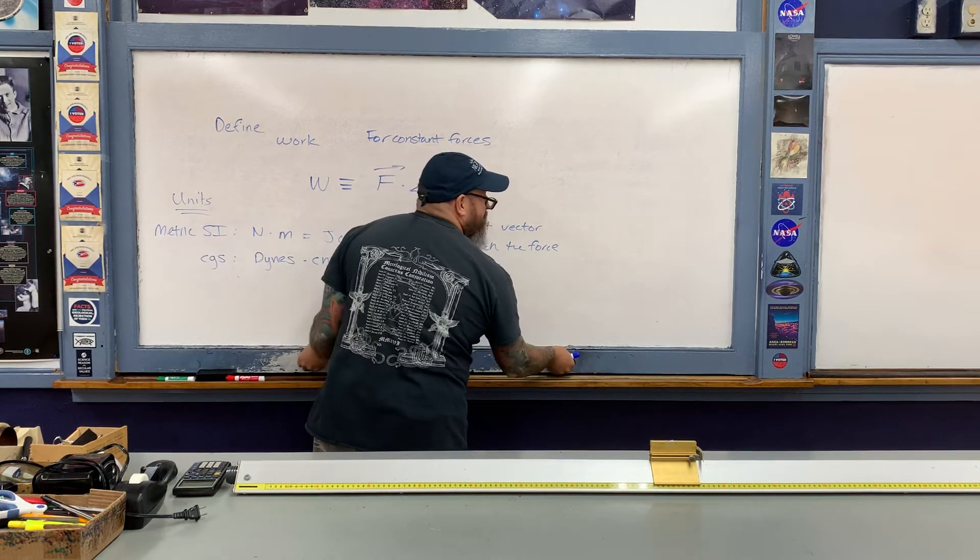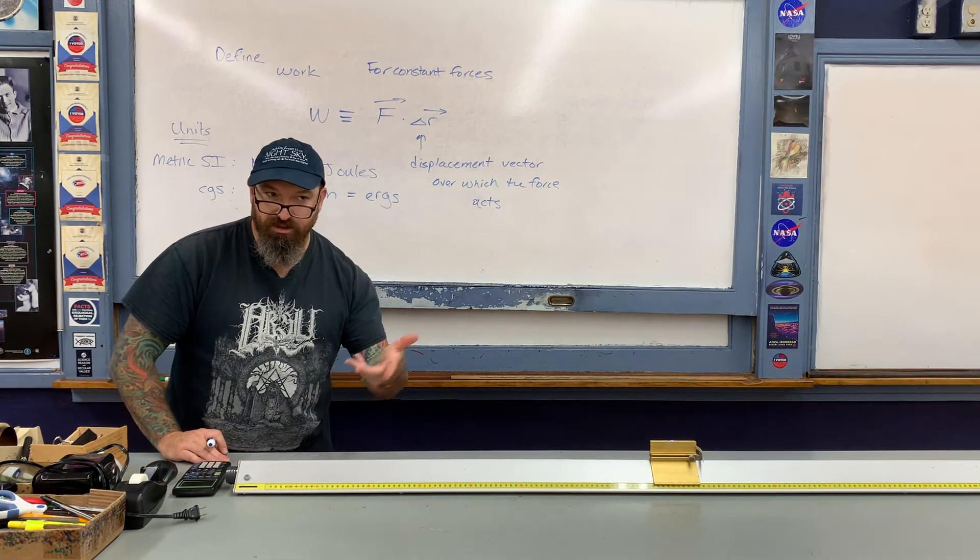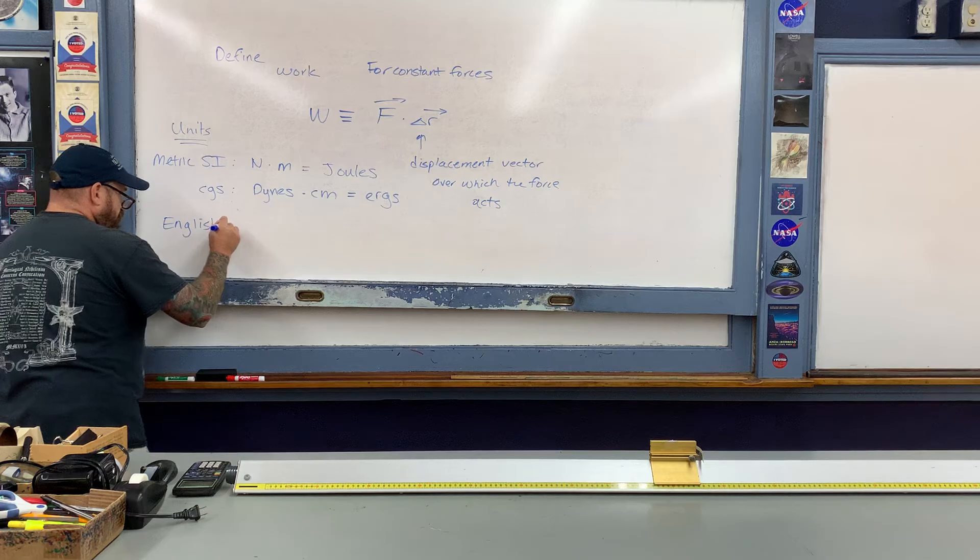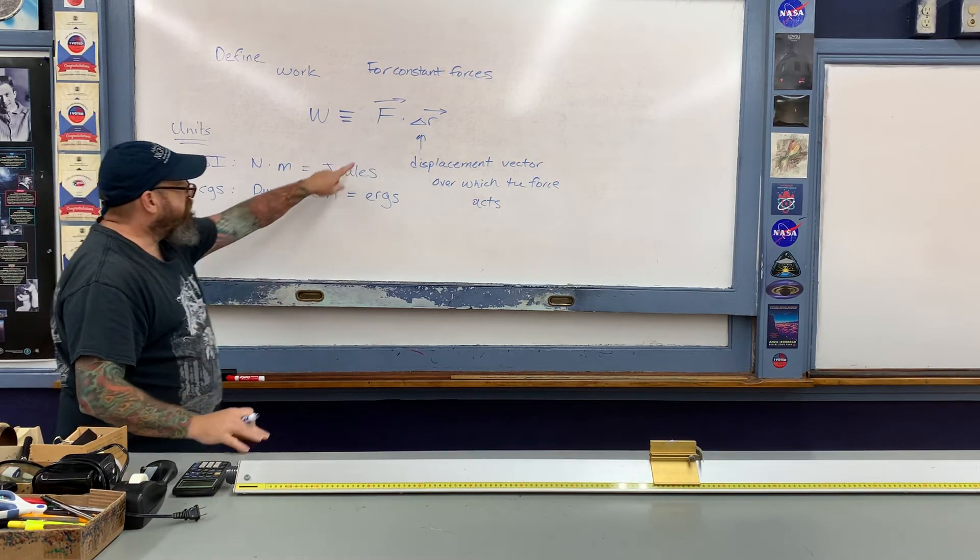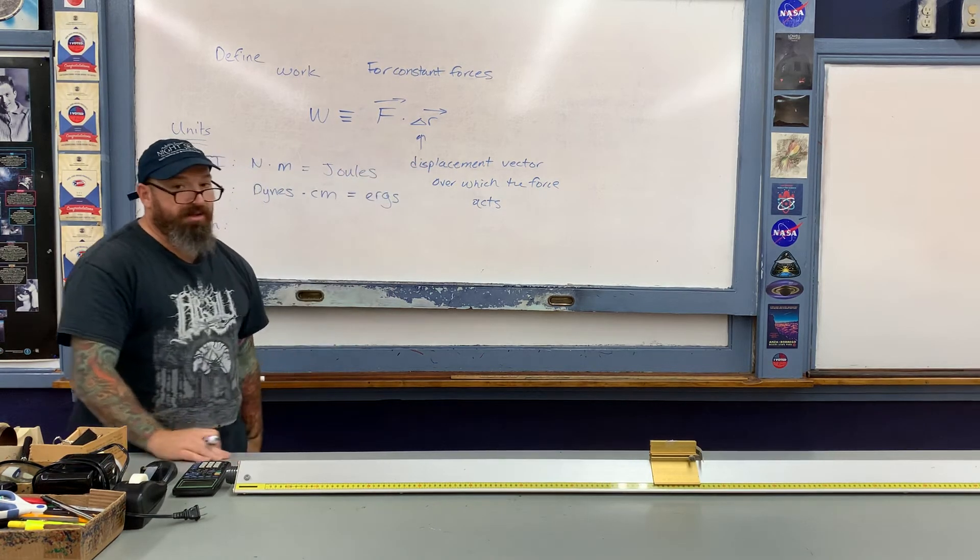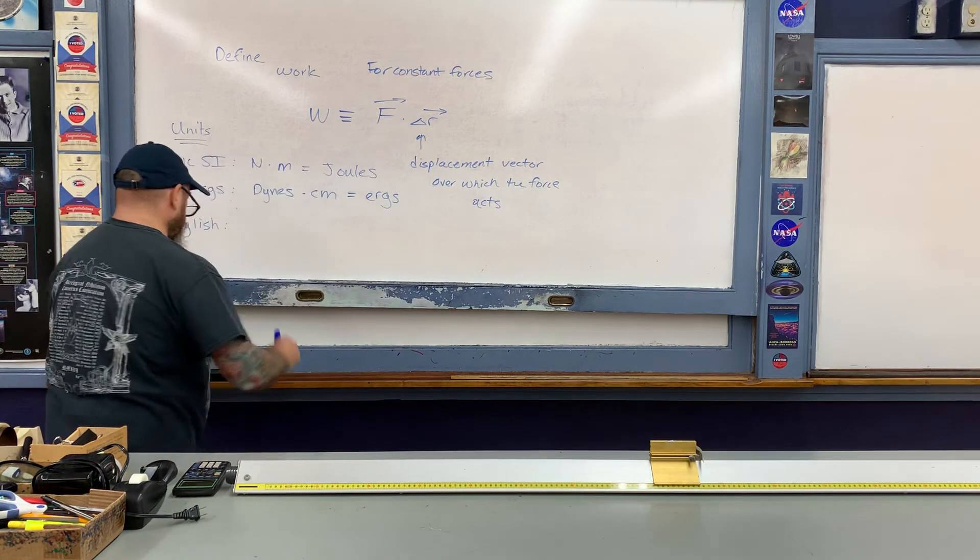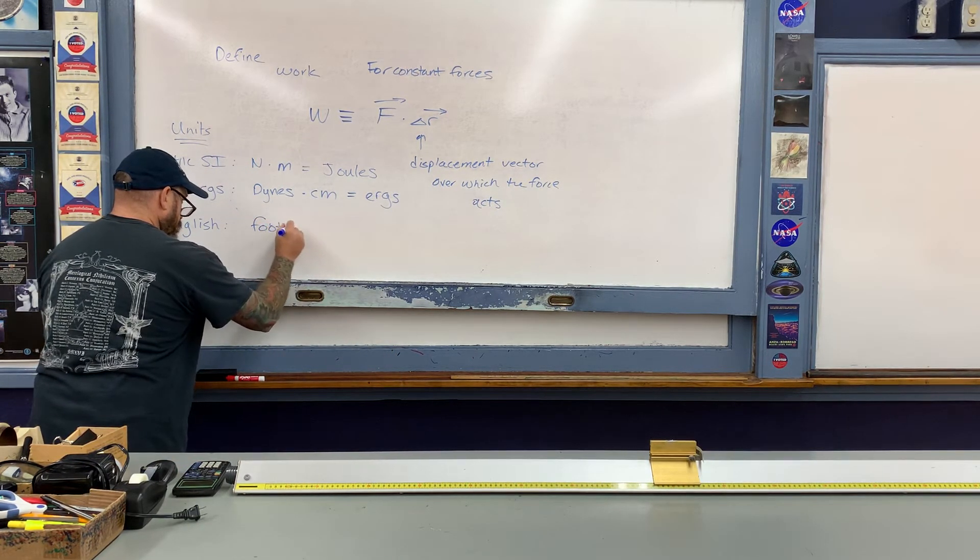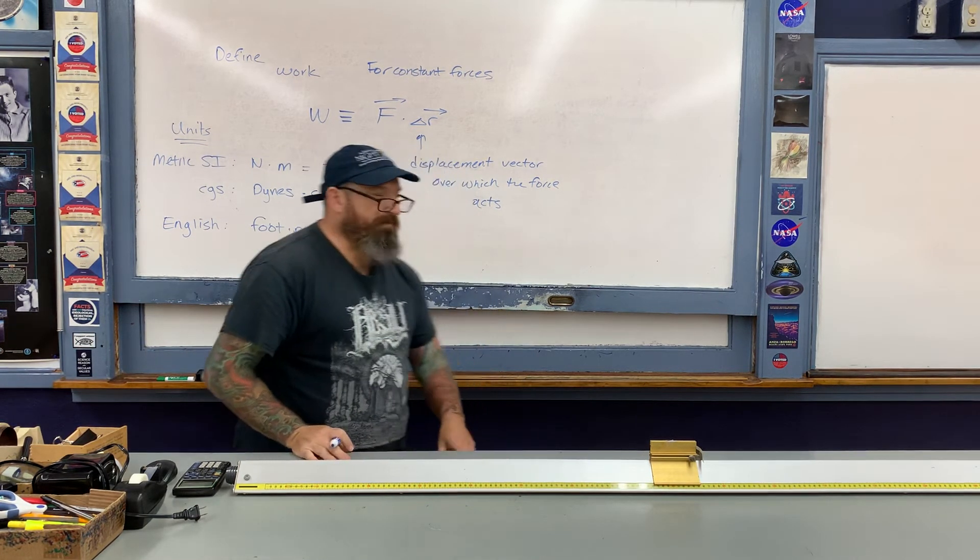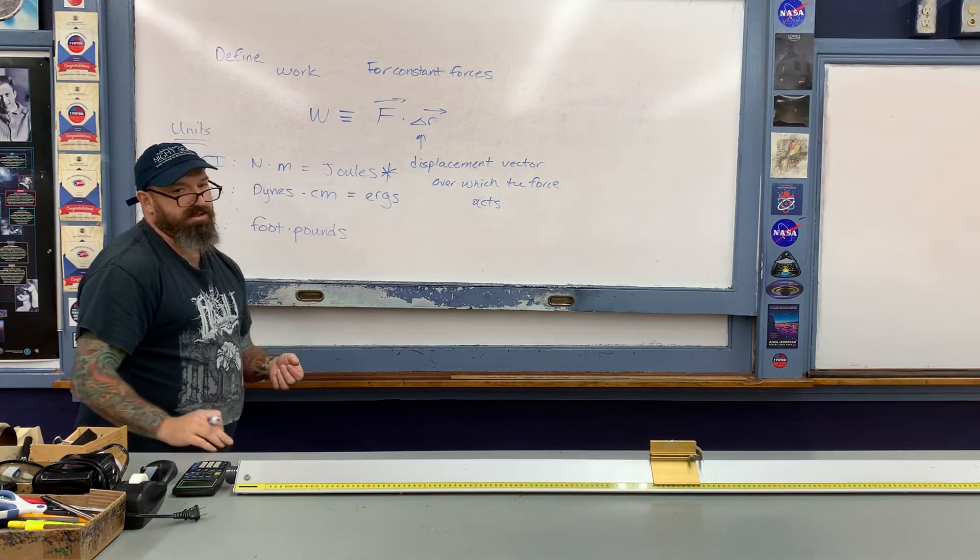This is also one of the last times we're going to see the English or Imperial system of units as well. In the old English system, they get very creative when it comes to the units. We have a force in terms of pounds, and then multiplied by displacement in terms of feet. This is just somewhat cleverly referred to as a foot-pound. However, when it comes to individual examples, almost exclusively we're going to see everything in terms of the metric SI system, in terms of joules.